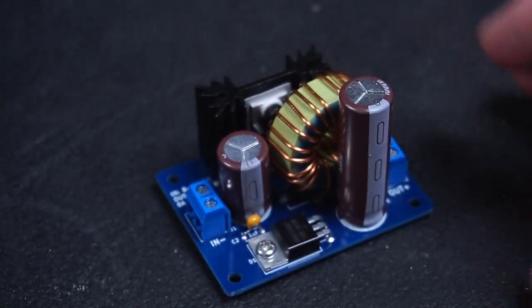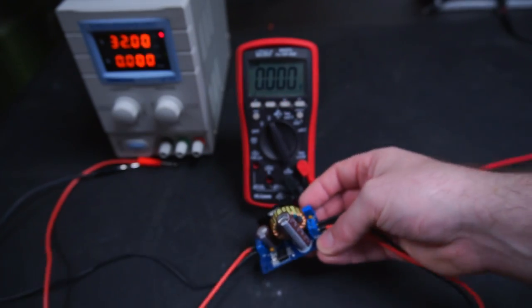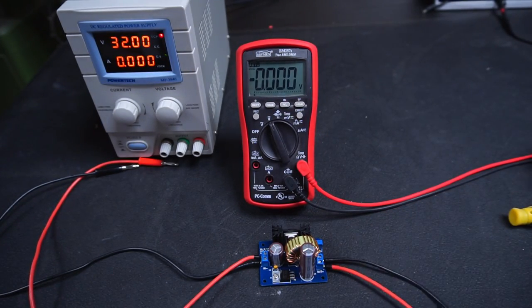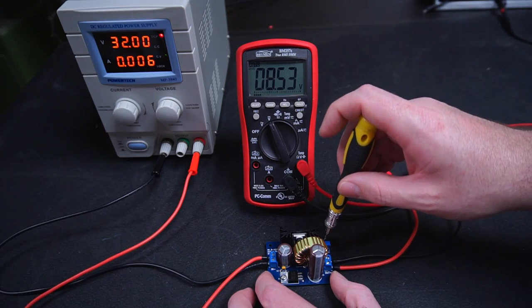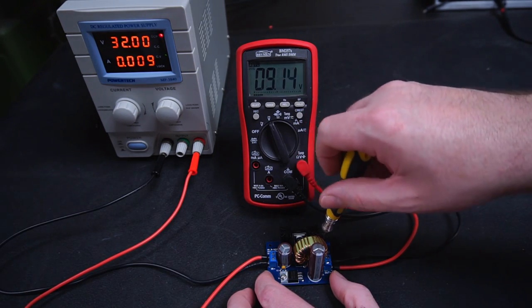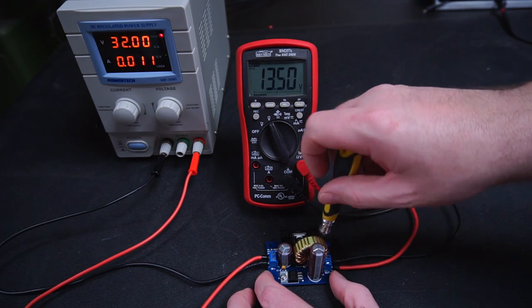After assembling the buck converter it was time to connect it to my power supply and connect my multimeter to the output of my buck converter. And as you can see by adjusting the trimmer my buck converter is doing a great job of controlling the voltage.